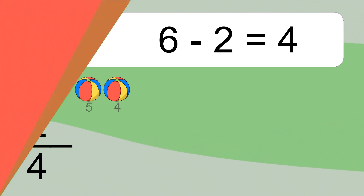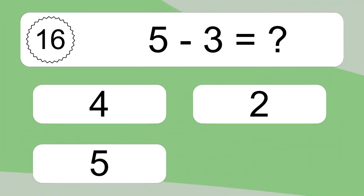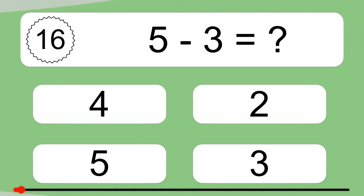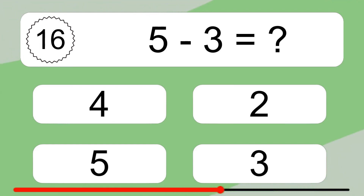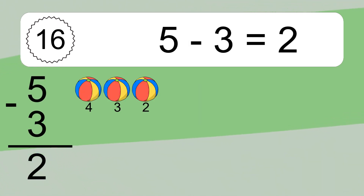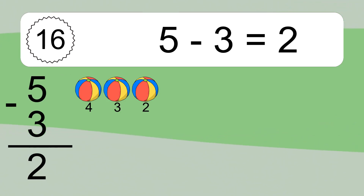5 minus 3 equals what? 5 minus 3 equals 2. Let's count it: 4, 3, 2.